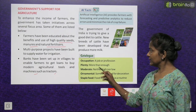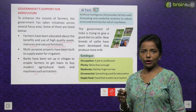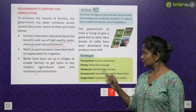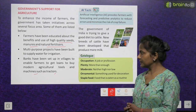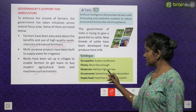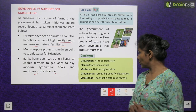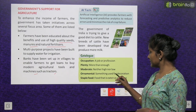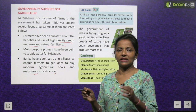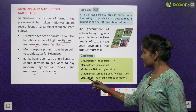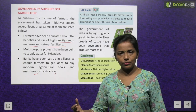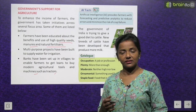Glossary: Occupation — a job or profession. Plenty — more than enough. Moderate — neither high nor low. Ornamental — something used for decoration; ornamental plants are used decoratively. Staple food — food that is eaten as a routine, i.e., daily-use food.